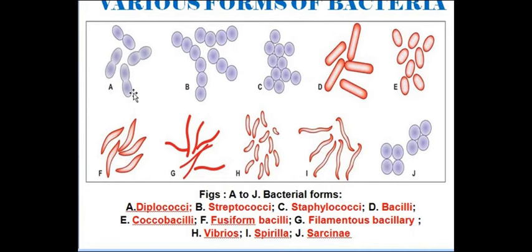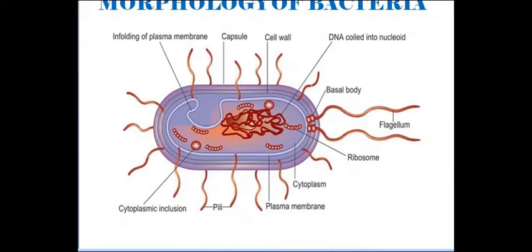The general morphology of bacteria includes: cell wall, plasma membrane, capsule, basal bodies for movement, flagella, ribosomes, cytoplasm, pili, cytoplasmic inclusions, and nucleoid where the DNA or genetic material is present. The surface adornments are the capsule/slime layer, appendages (flagella and fimbriae), cell wall, and cytoplasmic structures including cytoplasmic membrane, mesosome, ribosomes, polyamines, and cytoplasmic granules.